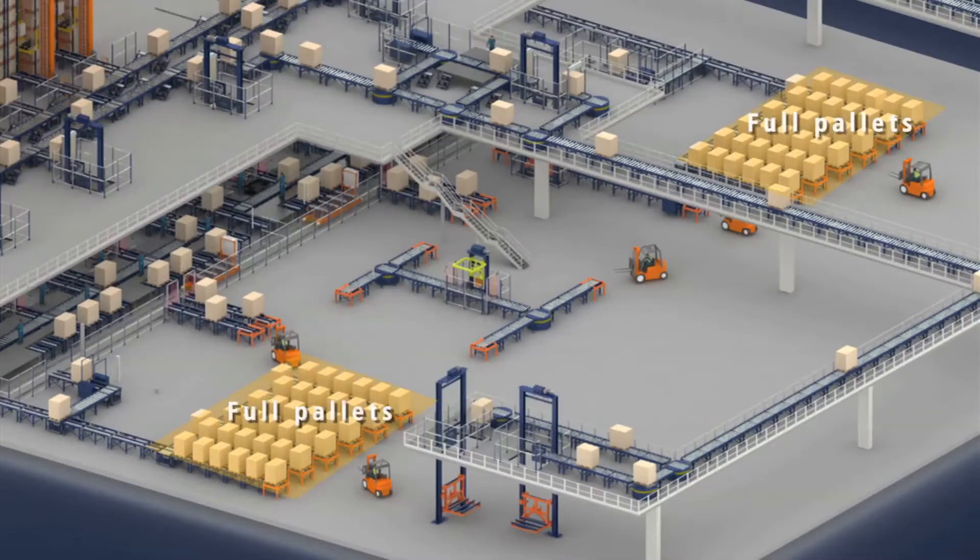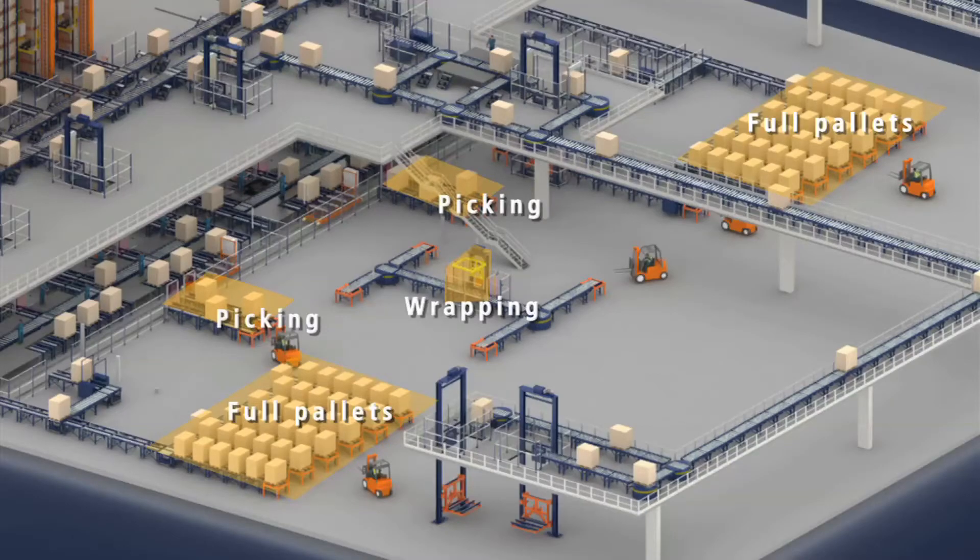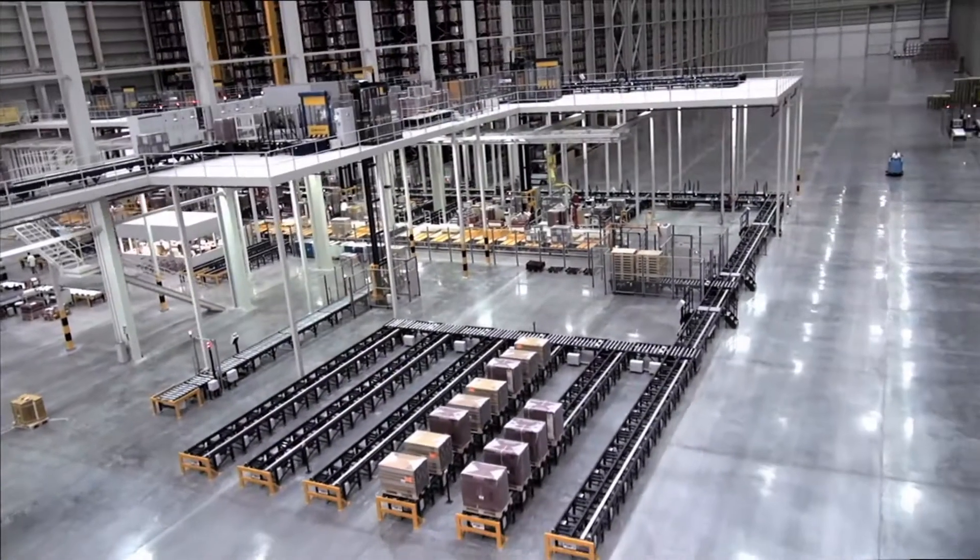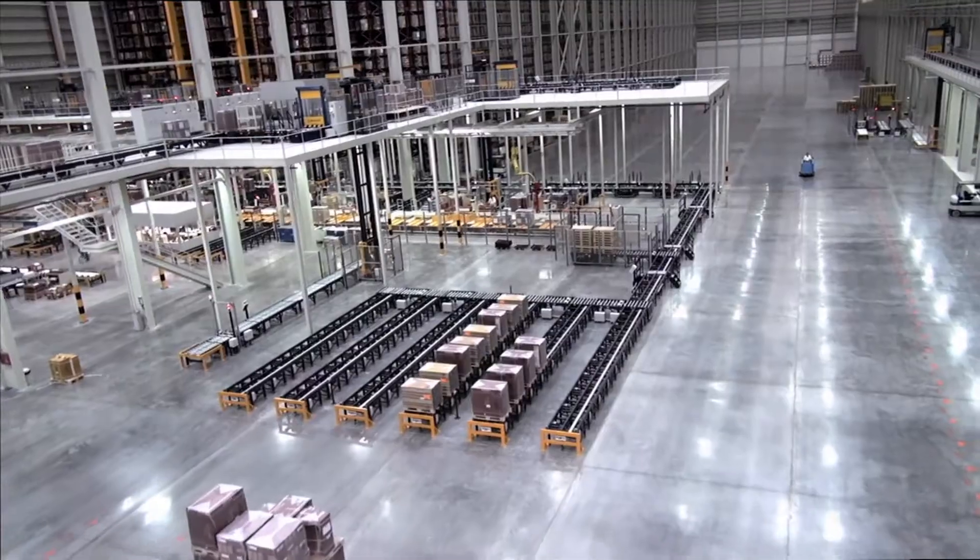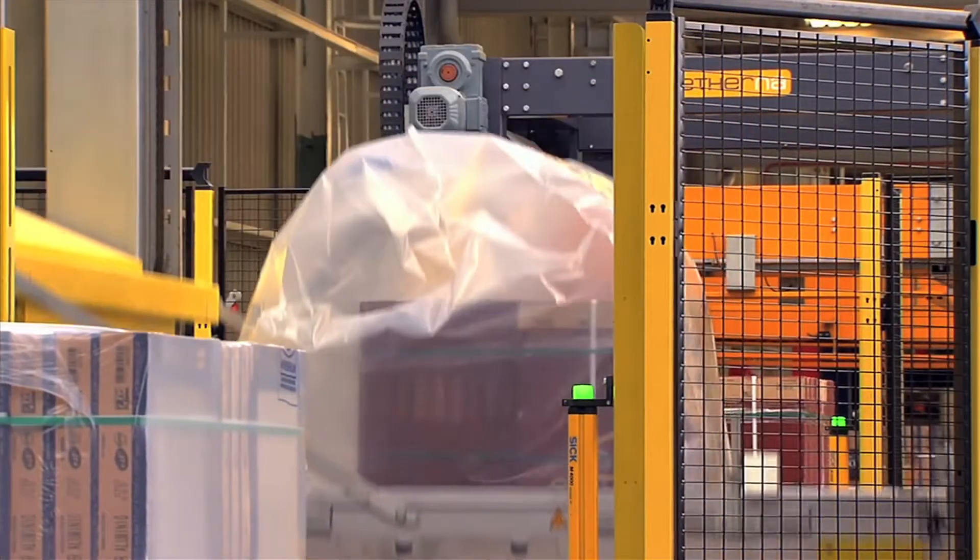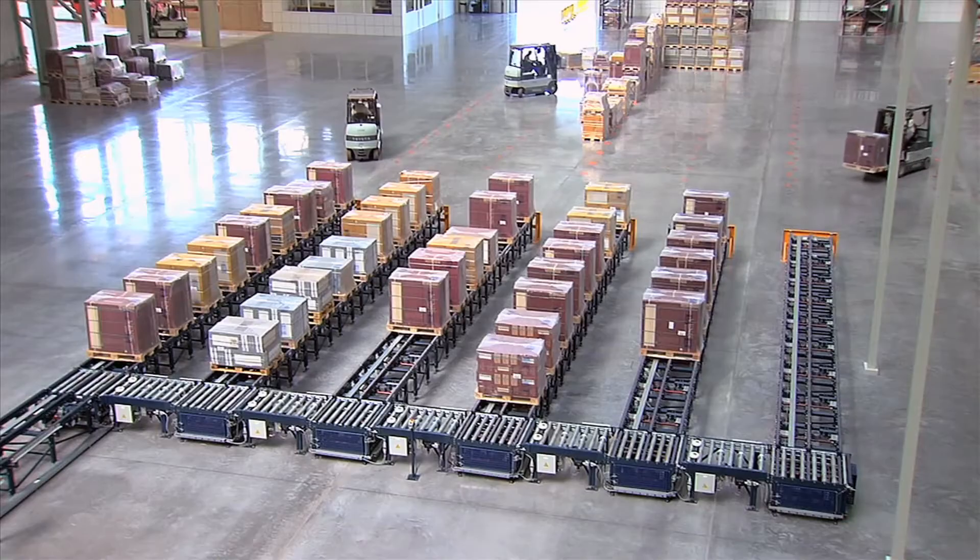The delivery zone has two areas for full pallets and another two for those coming from picking. The full pallets are distributed along six lines on either side of the silo. Those coming from the picking zone are wrapped to be shipped.